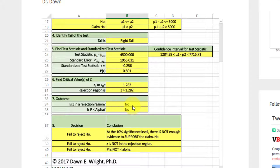Therefore, Z is not in the rejection region. P is not less than alpha. The decision is fail to reject. And the conclusion is at the 10% significance level, there's not enough evidence to support the claim.